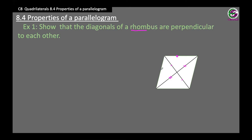All four sides are equal in a rhombus ABCD. We need to show that angle AOD equals angle AOB. If one of those angles is 90 degrees, all others will be 90 degrees because they are vertically opposite angles or forming a linear pair.